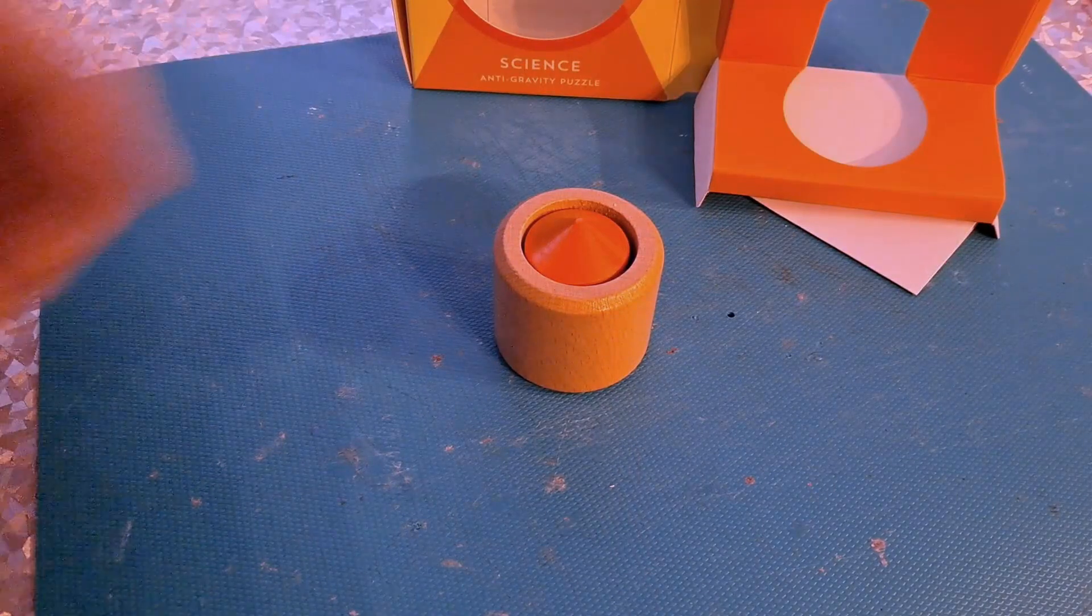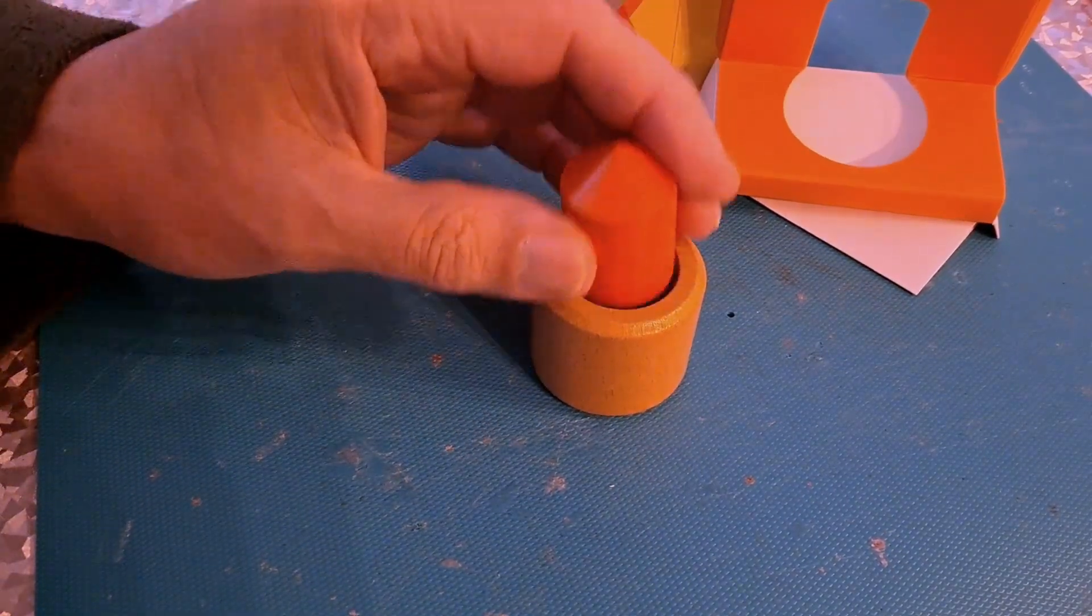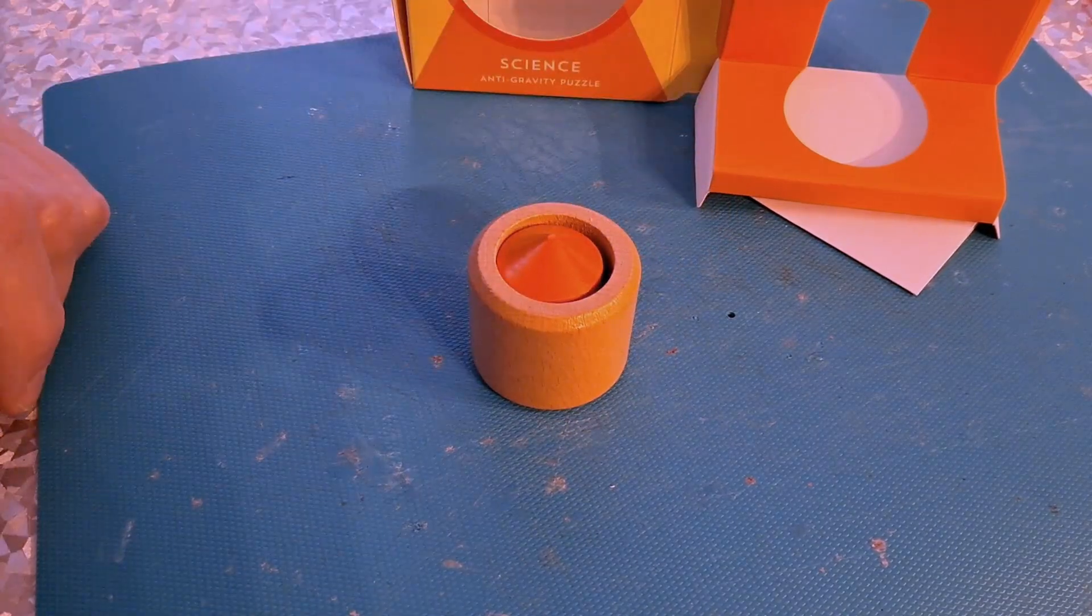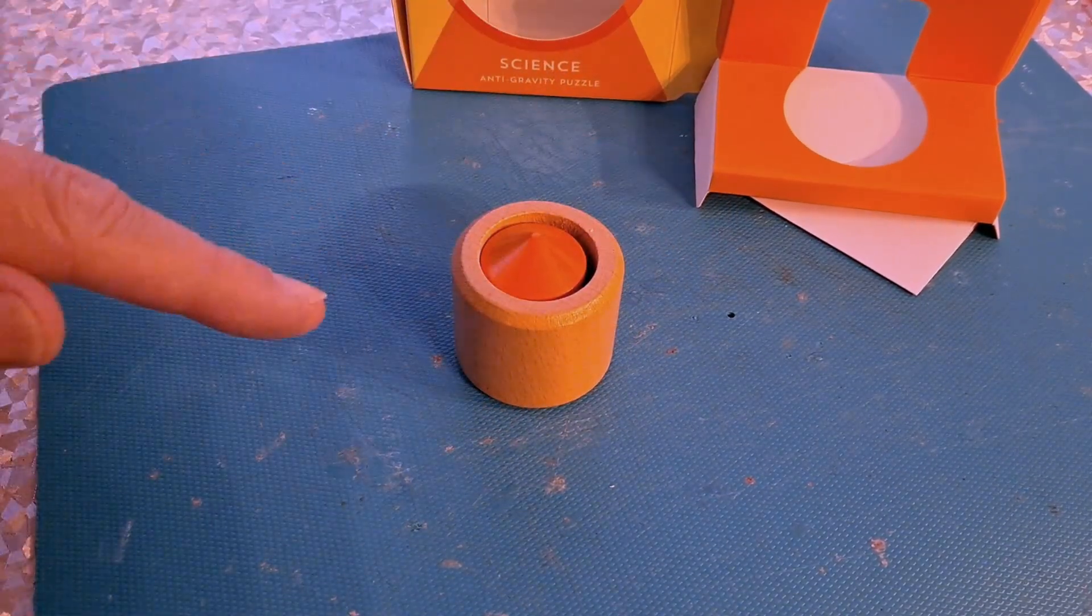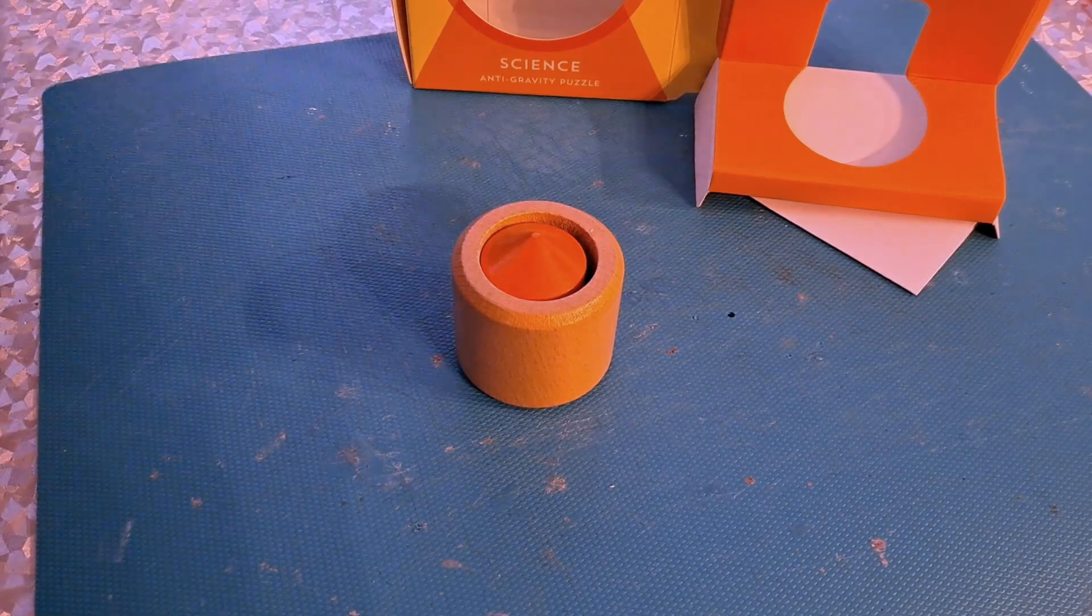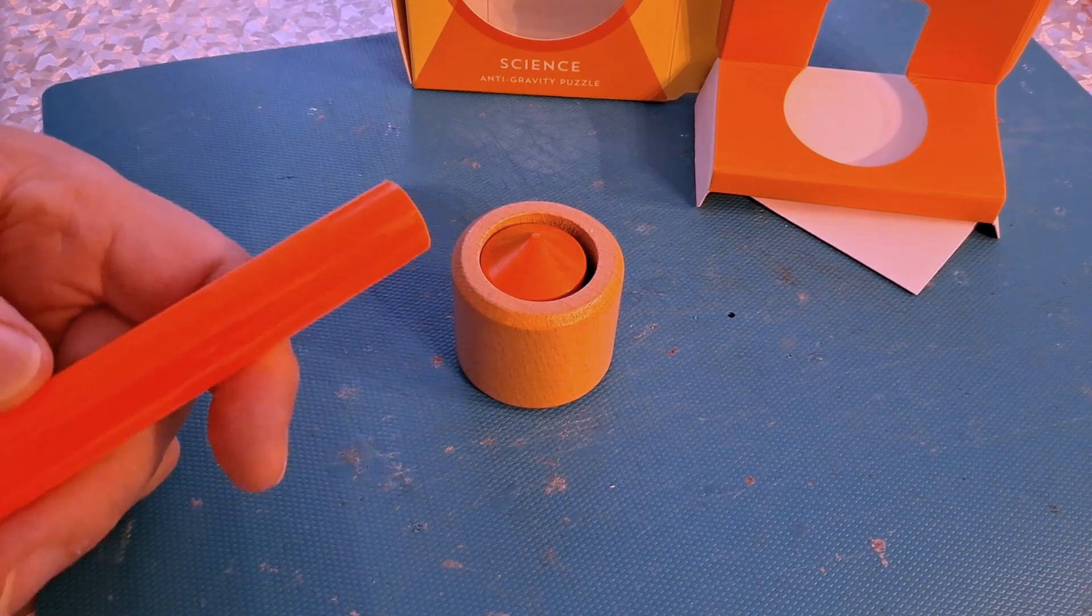The puzzle is how do you get that out of there without touching anything and the answer is you blow on it. Now keep my face out the way, I'm going to use this tube, see if we can get it to come out with that.